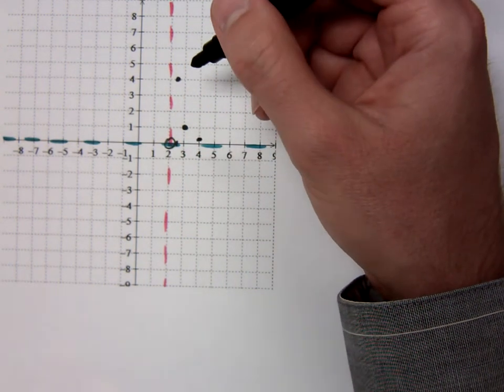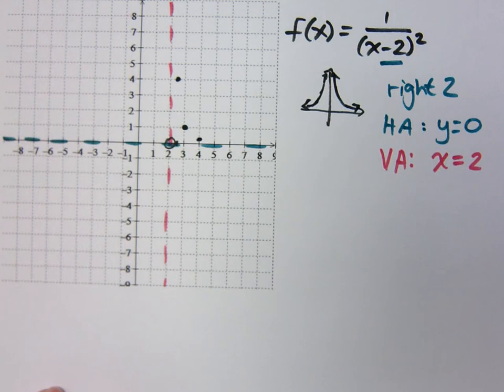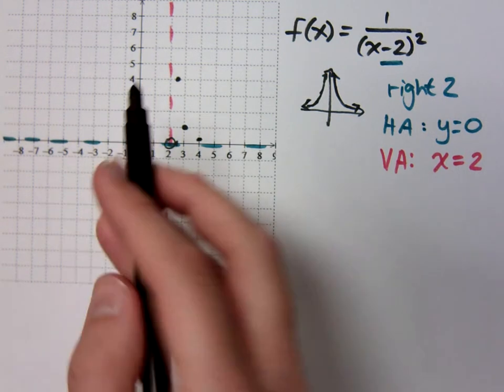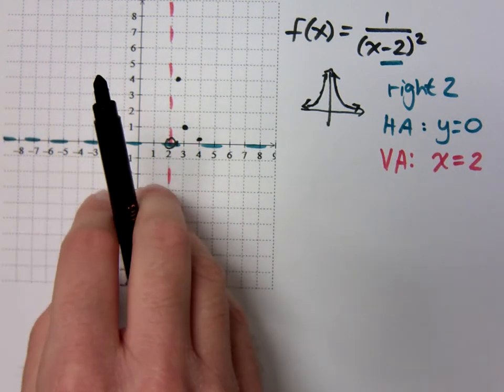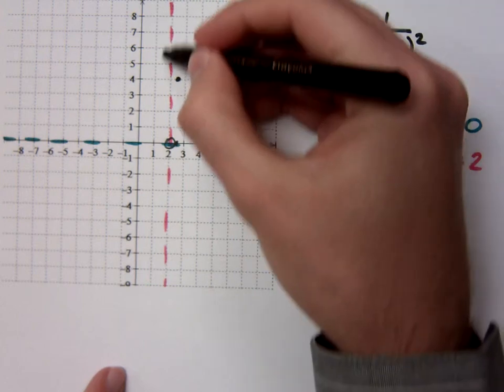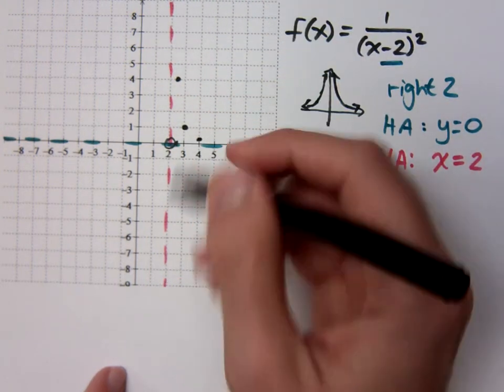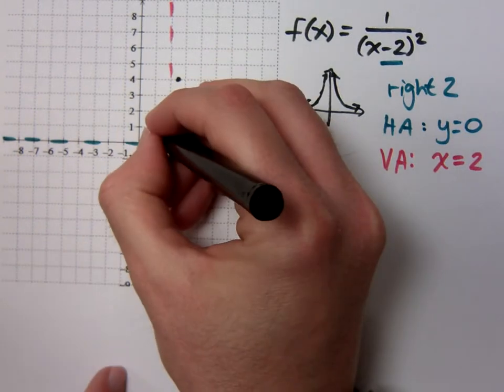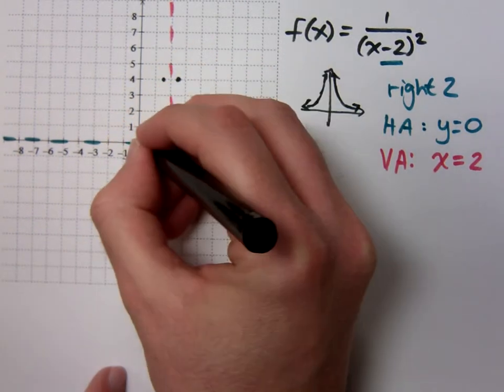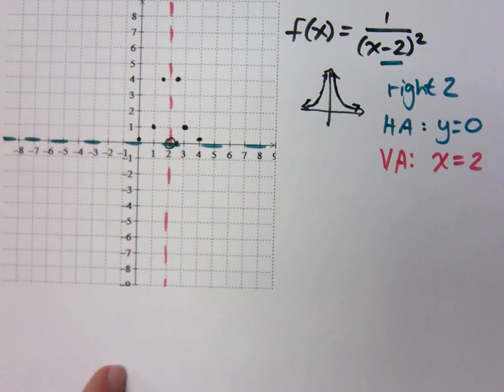Now what type of symmetry does the reciprocal squaring function exhibit? It exhibits symmetry about the y-axis. But since I shifted things over, its symmetry is now about what? That vertical asymptote.